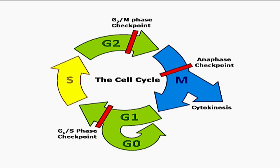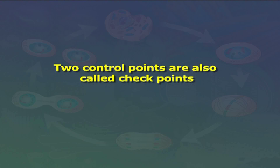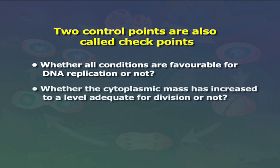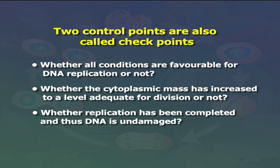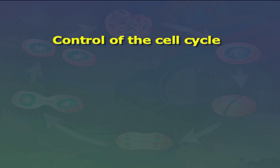Within interphase there are two control points: G1/S and G2/M, at which the cell decides whether to proceed to the next step. These are also called checkpoints. They provide an opportunity for the cell to ensure whether all conditions are favorable for DNA replication, whether cytoplasmic mass has increased adequately for division, and whether replication has been completed and DNA is undamaged. If the checkpoints do not give a green signal, the cell may halt in G1, S, G2, or M. Some embryonic cycles bypass some of these controls at certain stages of embryogenesis.